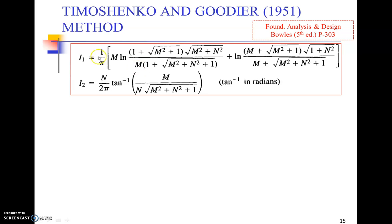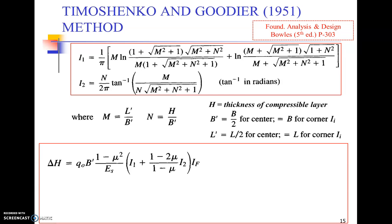Then I1 and I2, they've got some complex formulas derived using certain assumptions where M is equal to the length of the foundation divided by half the width, and N is equal to the thickness of the compressible layer divided by the width of the foundation. The delta S is given by this expression, or we can simplify this expression involving I1 and I2 using Is, which is a shape factor.